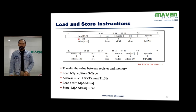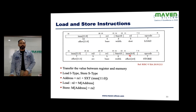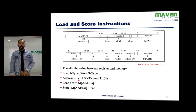For I-type, we remember there are 12 bits allocated for the constant. When it comes to S-type, the same 12 bits are used, but the constants have been split and placed at different locations. The address is always calculated as RS1 plus sign extension of the immediate value, which is a 12-bit sign-extended immediate added to source register 1.